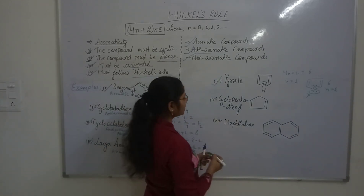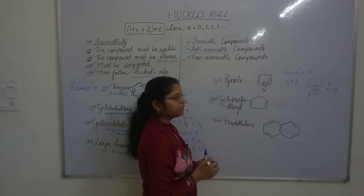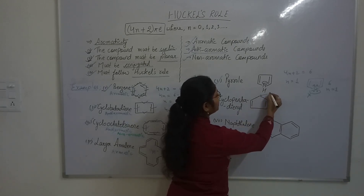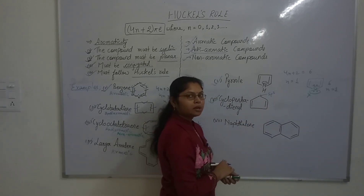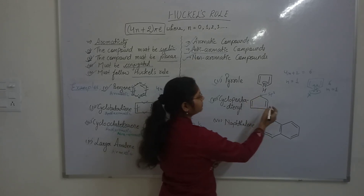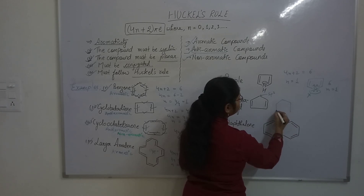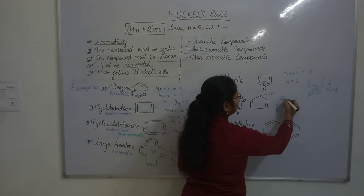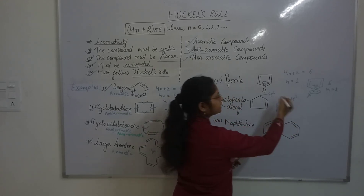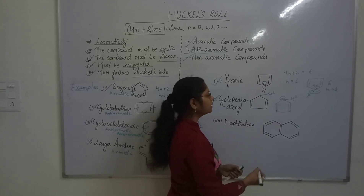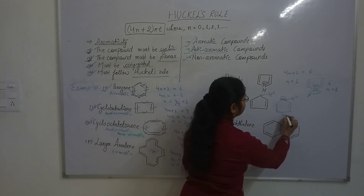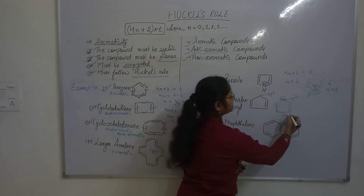Let us discuss cyclopentadienyl ions. The neutral structure is non-aromatic because one carbon is sp3 hybridized. If we put a positive charge on the compound, that carbon becomes sp2 hybridized and the compound becomes planar. However, counting the electrons gives 4 pi electrons — a 4n system — so the cyclopentadienyl cation is anti-aromatic.